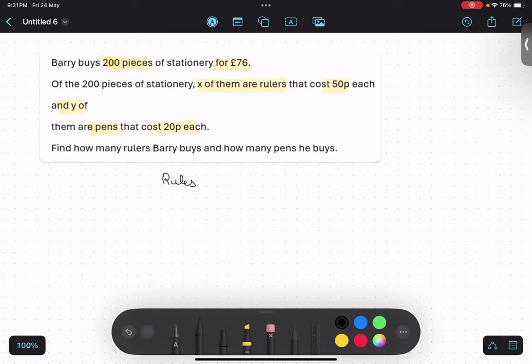So the rulers are x in number and pens are y in number. So what is the total of x and y? How many he is buying? 200 pieces. So therefore my first equation will become x plus y equals to 200. Is that thing clear? Yeah.